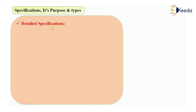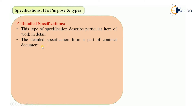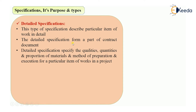The second type of specification is detailed specification. This type of specification will describe a particular item of work in detail, giving a detailed description about that particular item of work. The detailed specification will form a part of the contract document as it gives complete guidance about the material to be used and the workmanship to be adopted. Detailed specification also specifies the qualities, quantities, and proportion of materials — what quality, what quantity, and what proportion of various materials such as concrete to use — and the method of preparation and execution of that particular item of work.